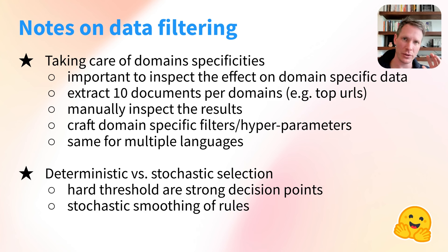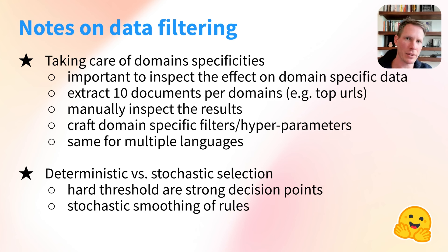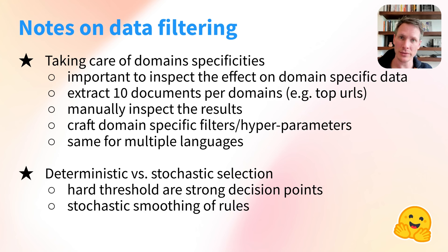Very likely you'll need to craft specific domain-focused hyperparameters. For instance, your heuristics might work well for blog posts but badly filter your LaTeX documents. You can either craft specific rules for each domain, or add a domain separately — for instance, you could remove all code from web data and just add a very big code dataset. But think about the implications: you'll basically remove mixed natural language and code documents, so you want to make sure you add this back again so your model still covers this type of input. You can also make use of stochastic selection: if your rule is maybe too harsh, stochastically sample in the filtering to keep a little bit of noise and smooth your rules.